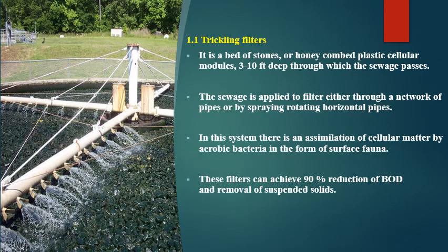Trickling filters consist of a bed of stones or honeycombed plastic cellular modules, 3–10 feet deep, through which sewage is passed. Sewage is applied through a network of pipes or by spraying via rotating horizontal pipes. There is assimilation of cellular matter by aerobic bacteria in the form of surface fauna. These filters can achieve 90% reduction in BOD and removal of suspended solids.